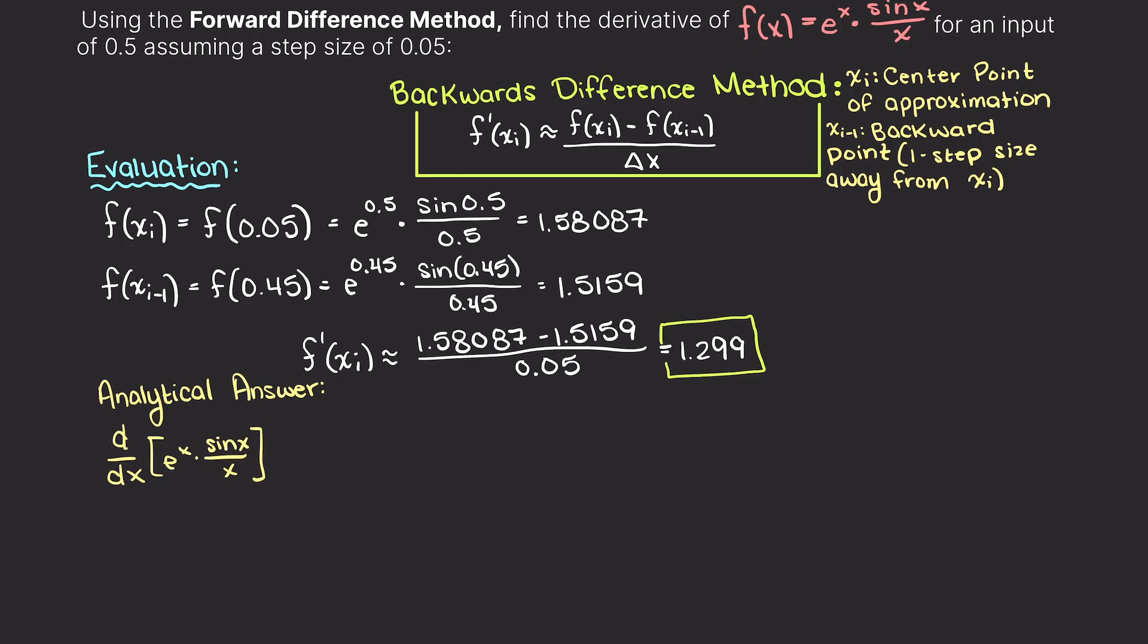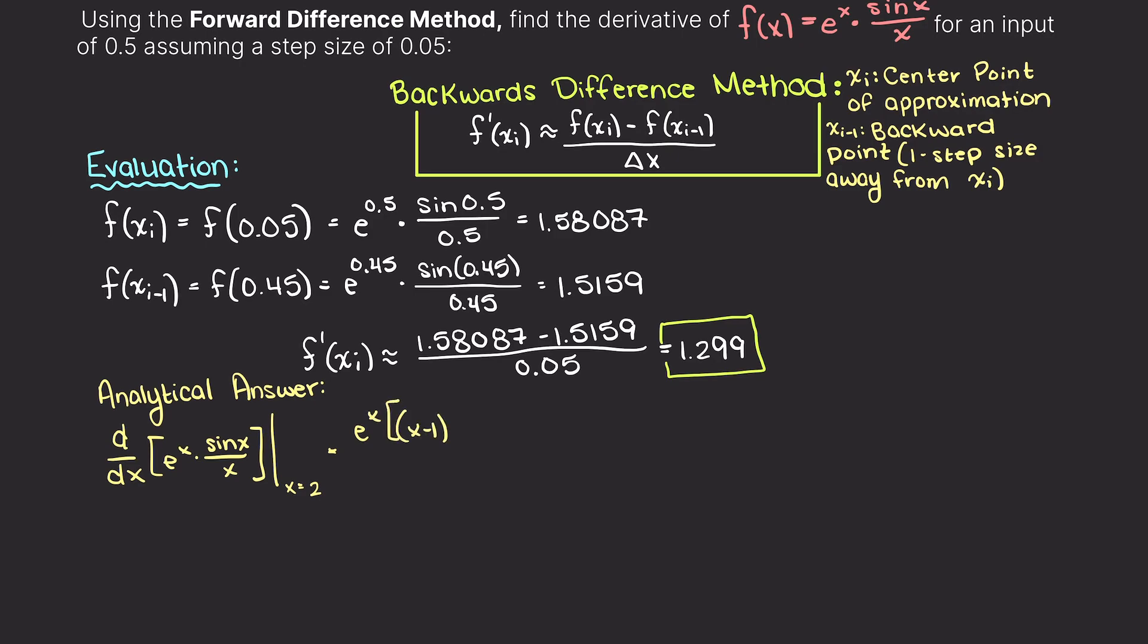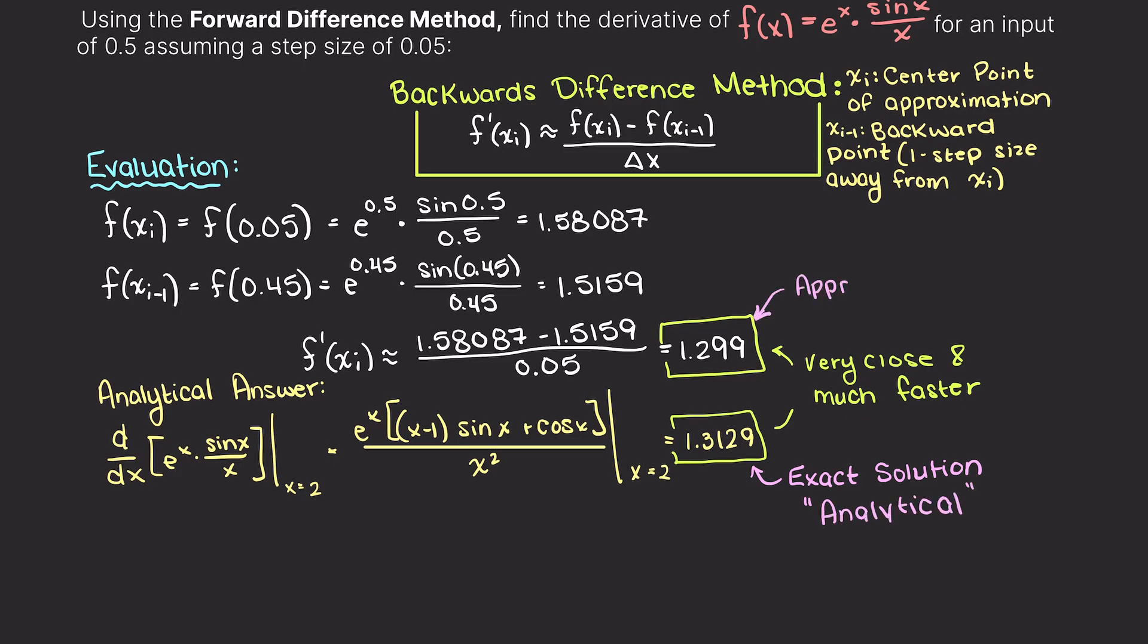Quickly, let's check how accurate this answer is. To do this, we need to first take the derivative of the function, simplify it, and then evaluate x at 0.5. Doing so, we get that this function's derivative at 0.5 is 1.3129, which is quite close to our approximative value.